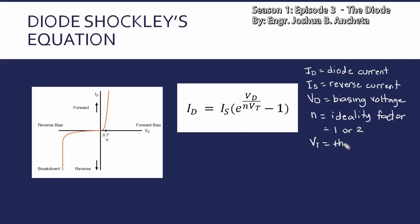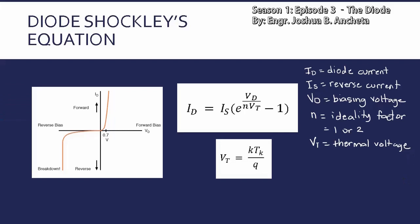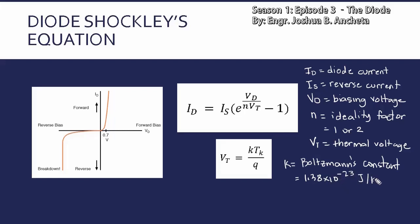And then VT is the thermal voltage, and then meron naman tayong separate equation para sa thermal voltage: this is equivalent to K times TK over Q. So yung K dito, ito yung Boltzmann's constant — and then the equivalent of this K is 1.38 times 10 raised to negative 23 joules per Kelvin. Then yung temperature naman, this is in Kelvin. And then yung Q natin, this is charge of electrons — this is 1.6 times 10 negative 19 Coulombs.